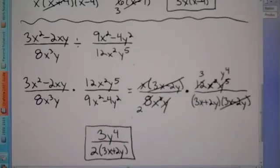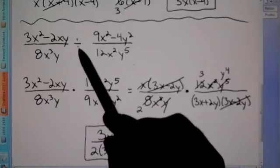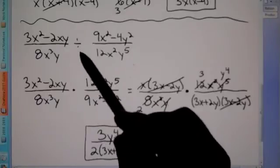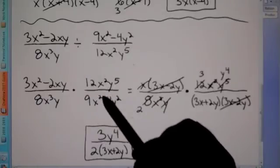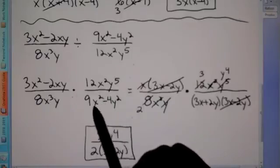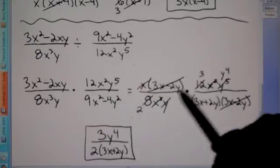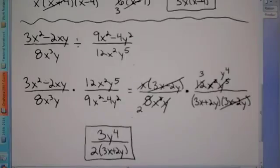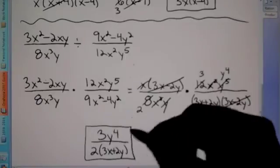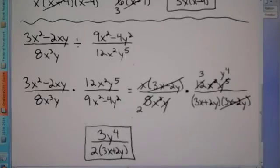You cannot reduce the Y's or the 3's because of that plus sign, so this would be your final answer. Any division problem you can change into a multiplication problem simply by flipping the second fraction. From there, factor what you can top and bottom, then reduce what you can, and you're left with your answer.